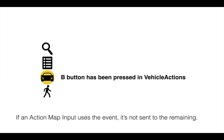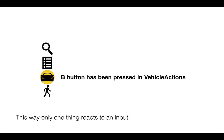So the B button press has been registered by the vehicle actions, and scripts listening to the vehicle actions can respond accordingly. It also means the B button press will not be sent to the player actions — the next action map — even if the B button was also mapped in the player actions. In this way, only one thing at a time reacts to a given input.